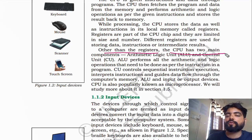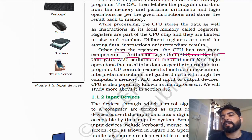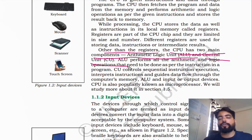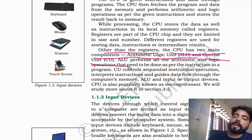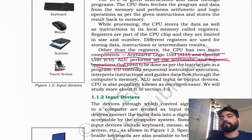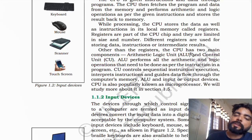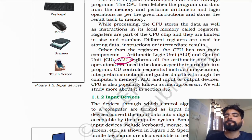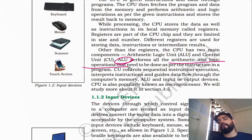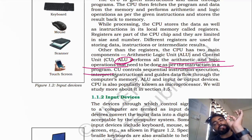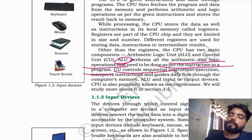Other than the registers, the CPU has two main components: the arithmetic logic unit (ALU) and the control unit. The ALU performs all arithmetic and logical operations as per the instructions given by the user.